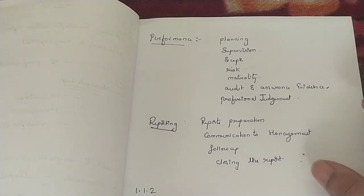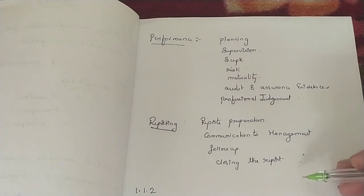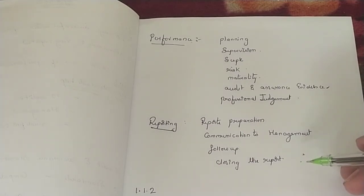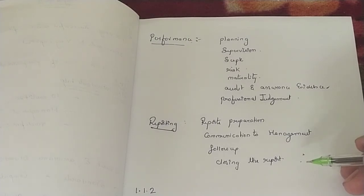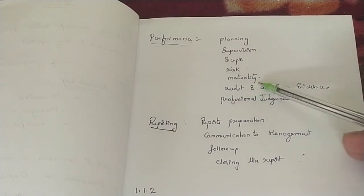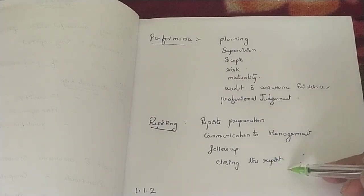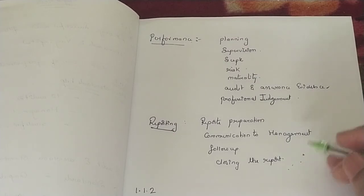So now we have seen section 1.1 — IS Audit and Assurance Standards, the classification of that, and what documents are present: standards, guidelines, and tools and techniques. We have also seen for whom it will be useful — auditors, management, and CISA professional holders. We have seen the three broad categories of ISACA IS Audit and Assurance Standards: General — where the IS auditor must follow independence, ethics, competency, knowledge, and skills; Performance — covering planning, scope, risk classification, materiality, and professional judgment; and Reporting — the final stage where the audit is closed.